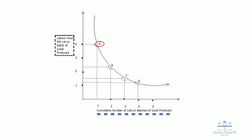The labor hours required per lot of goods is lower as production increases. The labor hours required for producing the second lot is close to two hours, and it goes down further by the time a company is producing the third and fourth lot of the good or product.